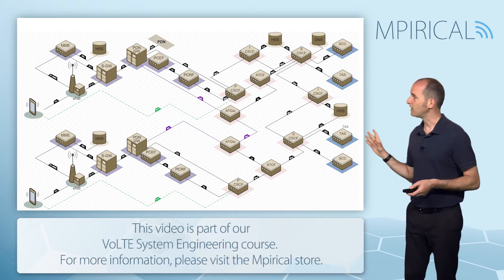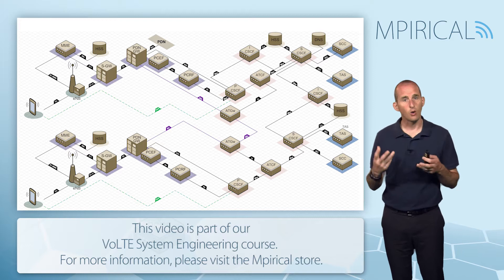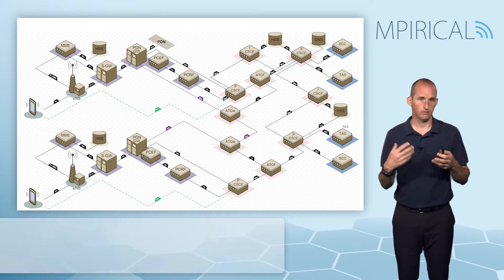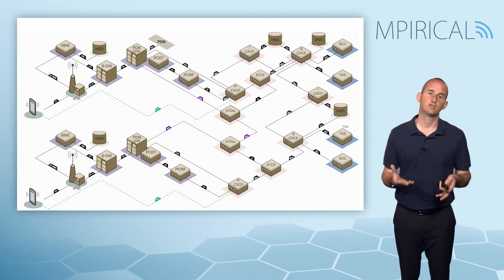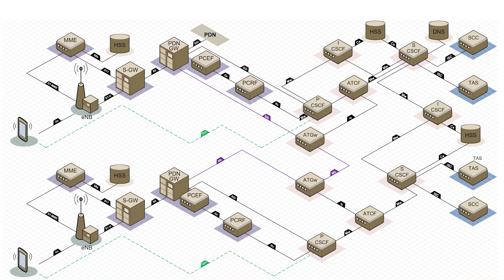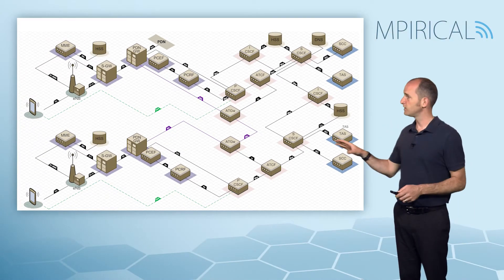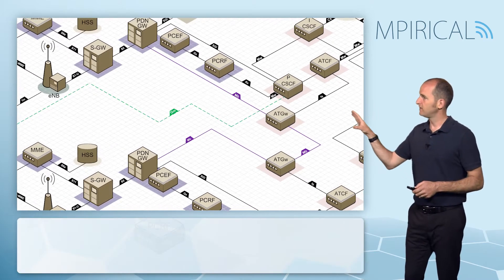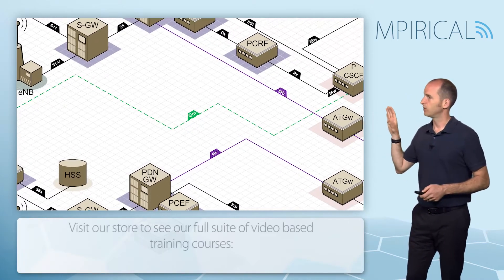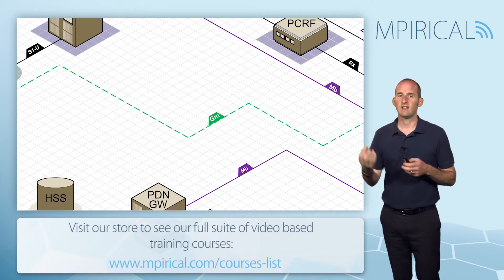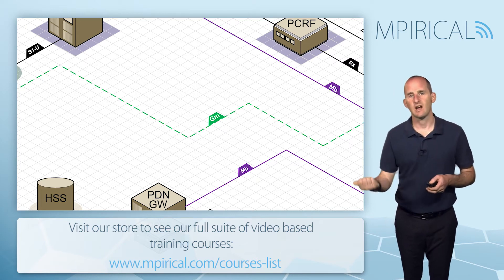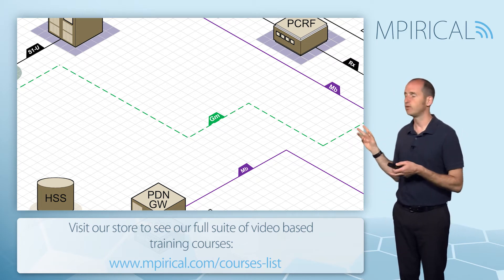This diagram is a complicated one, but VoLTE is a complicated end-to-end network architecture. We're going to go around this diagram to orientate ourselves in terms of LTE versus policy and charging control versus IMS. The first point to note is right in the center of the diagram, where we can see the connectivity that the phone has to the IMS — this is the Gm reference point.